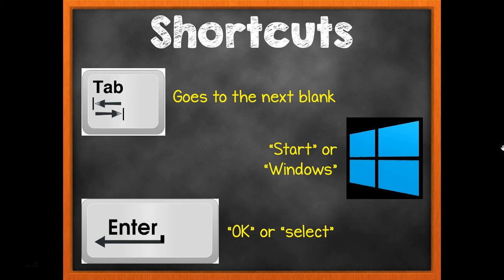A couple of shortcuts: using the mouse pad can go slow and require very precise clicking. Anytime you're typing something, you can use the Tab button at the top left corner to jump to the next blank. If there's a button like OK, Accept, or Continue, you can often just press Enter. The Start or Windows button at the bottom left corner gives you menus, helps you search for things, and is also where you go to shut down your computer.